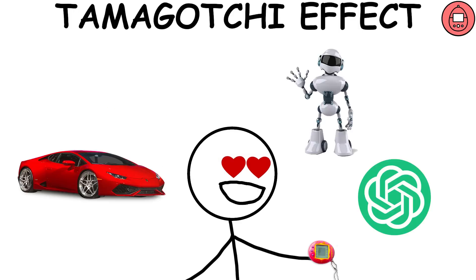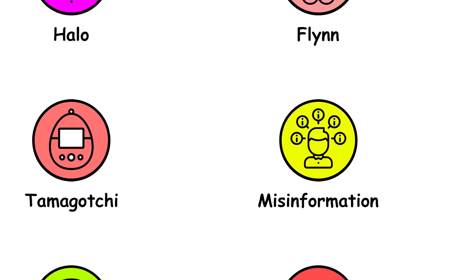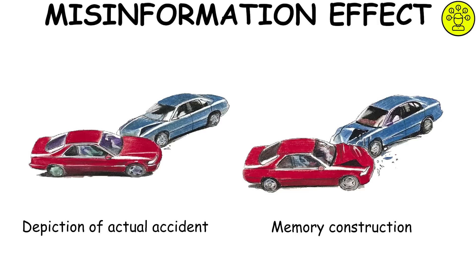Misinformation effect. The misinformation effect occurs when a person's recall of episodic memories becomes less accurate because of post-event information.